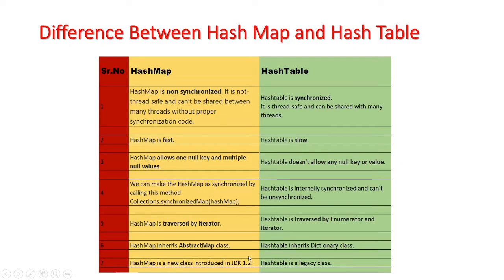The last difference between HashMap and HashTable is that HashMap is a new class introduced in Java 1.2, while HashTable is a legacy class. To summarize the important differences: HashMap is non-synchronized while HashTable is synchronized; because HashMap is non-synchronized, it is faster than HashTable; and HashMap allows one null key and multiple null values, while HashTable does not allow any null key or value.